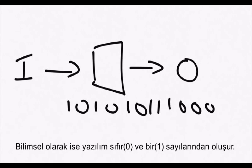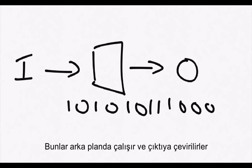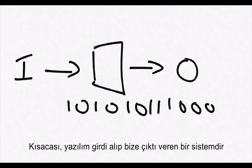And you don't have to worry about these ones and zeros. We never see them as programmers. They are just in the background. It's what our code gets translated to. So that's all software is, a system that takes inputs and gives you outputs.